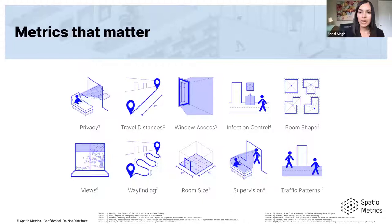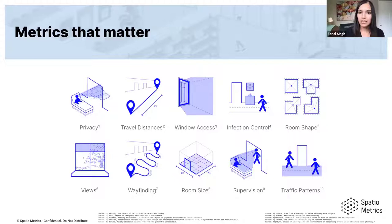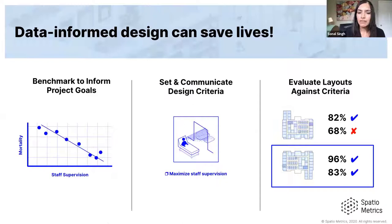Just as we have automation for facade data or materials data available in early design, we're looking to bring this quantification to the early phases — focusing on owner program and operational priorities. The metrics I'm showing have about 40 years of research behind them in terms of driving building outcomes for the humans living and working in a space.